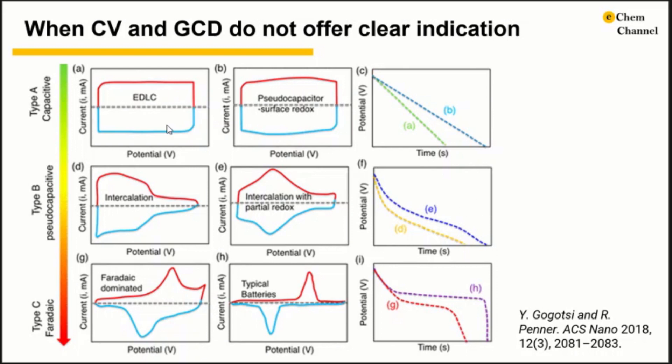In brief, a rectangular-shaped CV means EDLC, a mirror-like shape means pseudocapacitive, and well-separated peaks means battery type. But you may also notice that there are some CVs that show very vague characteristics.